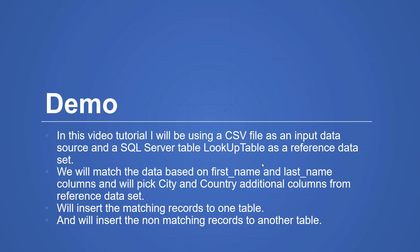We will match the data based on first name and last name columns between the input and reference dataset, and we will pick city and country as additional columns from the reference dataset. Then we will insert the matching records to one table and insert the non-matching records to another table.